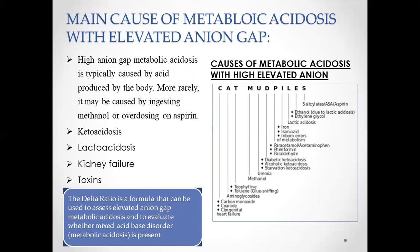CAT MUD PILES consists of several drugs and reasons that may lead to metabolic acidosis, including carbon monoxide, cyanides, theophylline, toluene, methanol, iron, isoniazid, ethylene glycol, salicylates, aspirin, paracetamol, and paraldehyde. Conditions that may lead to metabolic acidosis with elevated anion gap include diabetic ketoacidosis, alcoholic ketoacidosis, starvation ketoacidosis, and lactic acidosis.